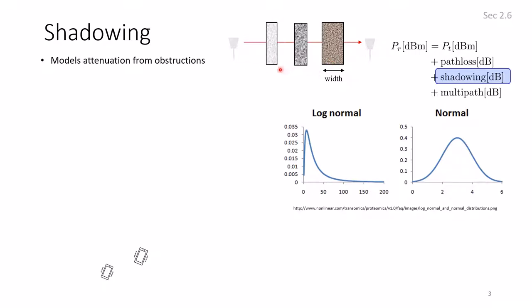The model for the obstruction between the transmitter and receiver, as you might guess, is random, because if it's indoor or outdoor, you don't know the number of obstructions and the type of obstructions, building, furniture, and what material is made of. So the randomness comes from the number of obstructions and the type of obstruction.